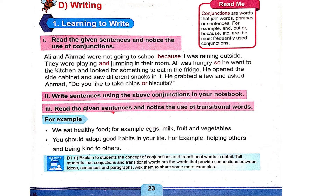Read the given sentences and notice the use of transitional words. 'We eat healthy food, for example eggs, milk, fruit, and vegetables.' 'You should adopt good habits in your life, for example helping others and being kind to others.'